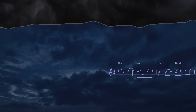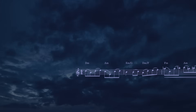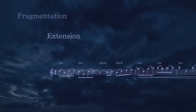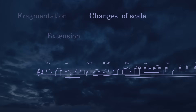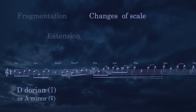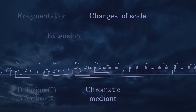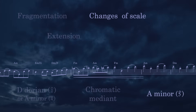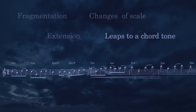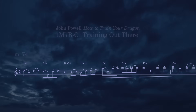Let's go through one more final version of this theme. In this tense and desperate version, there's more lead-in material and variety: fragmentation, extension, and multiple changes of scale throughout. It begins in D Dorian starting on scale degree 1, then moves through a chromatic mediant harmony, and then begins again on A minor starting on scale degree 5. Listen for the way the leaps on weak beats can move to chord tones, and the extension of repeated note patterns in the tail.